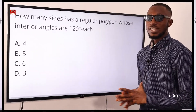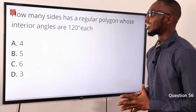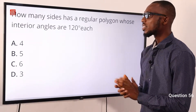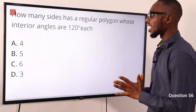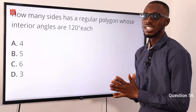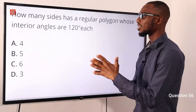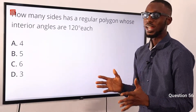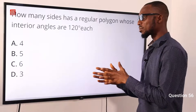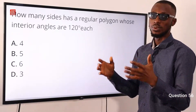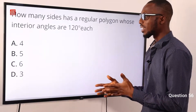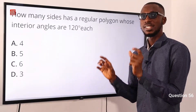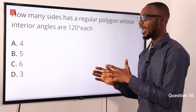Number 56. How many sides has a regular polygon whose interior angles are 120 degrees each? We can use the formula: interior angle equals 180 minus 360 over n, where n represents the number of sides.